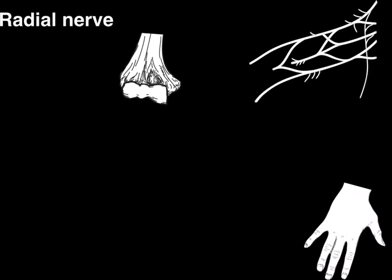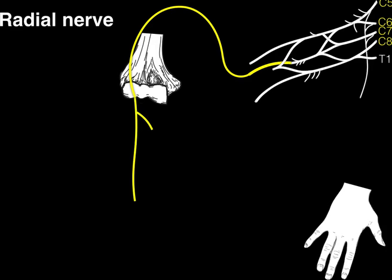Now the radial nerve. The radial nerve has contributions from C5 all the way to T1, though T1 not as much. Coming off the posterior cord is the radial nerve, which gives off branches as it courses down the arm — including branches to the triceps muscles, which we'll cover in another tutorial. It crosses from the posterior region of the humerus to the anterior part, then dives back into the posterior forearm along the lateral supracondylar ridge.